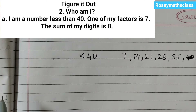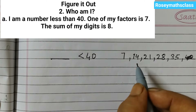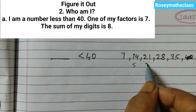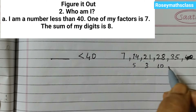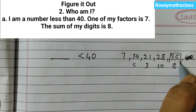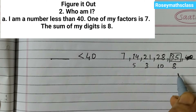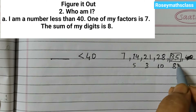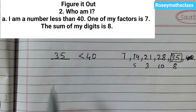The sum of my digits is 8. When we add the two digits it should be 8. So: 1+4=5, 2+1=3, 2+8=10, 3+5=8. Here the sum of the two digits 3 and 5 is 8, so we need to find out the number.